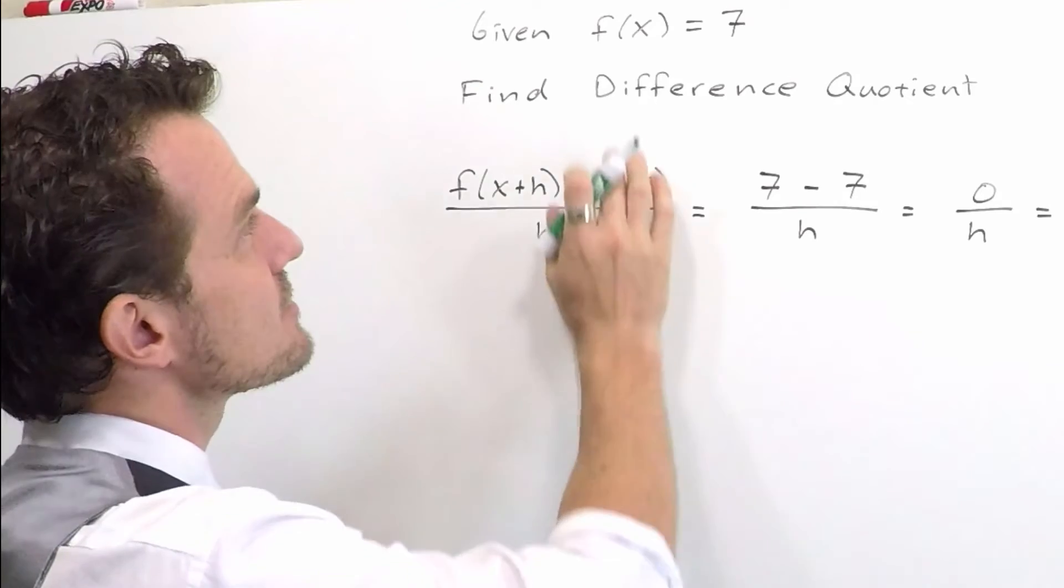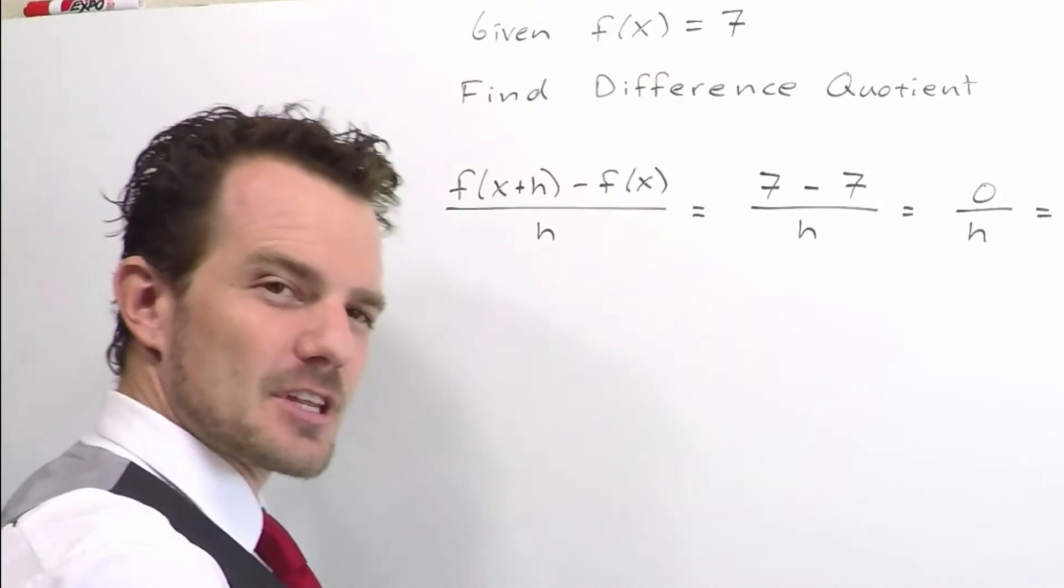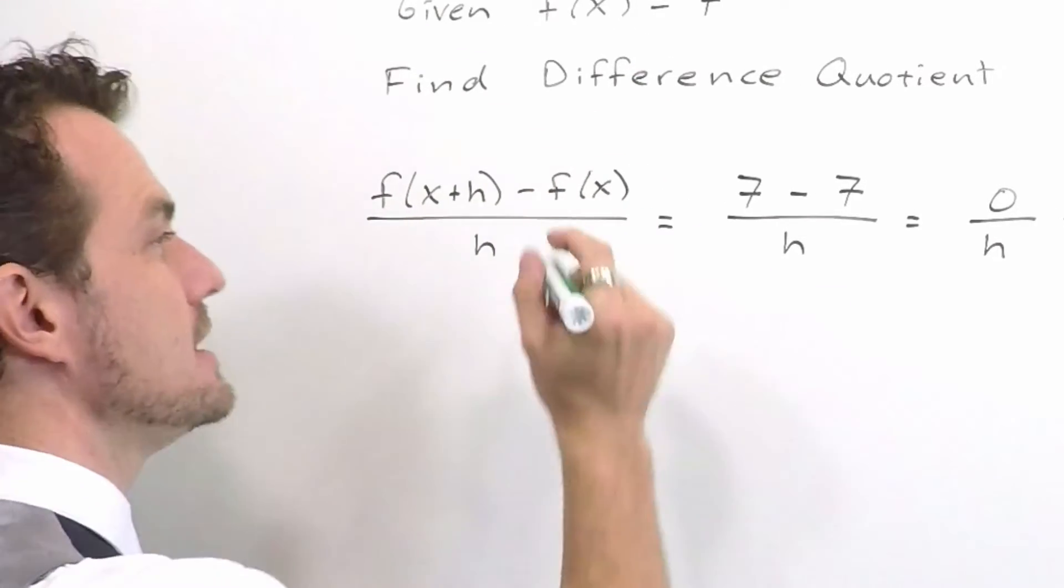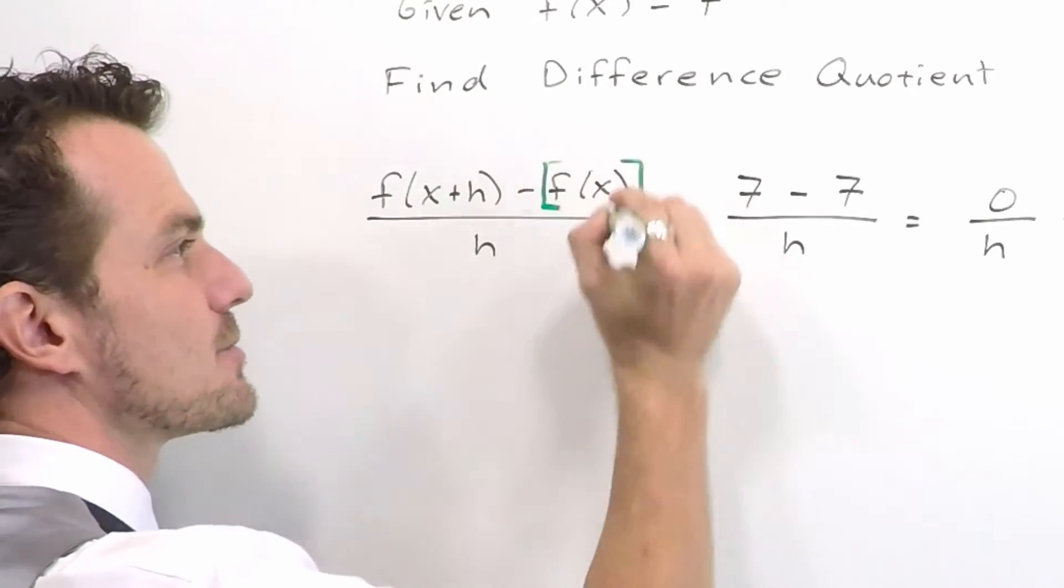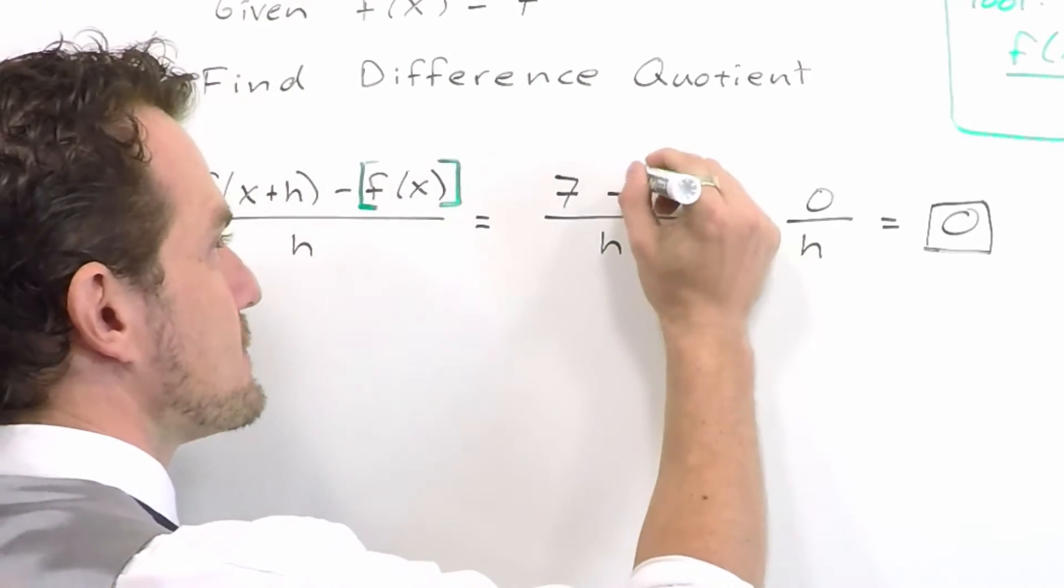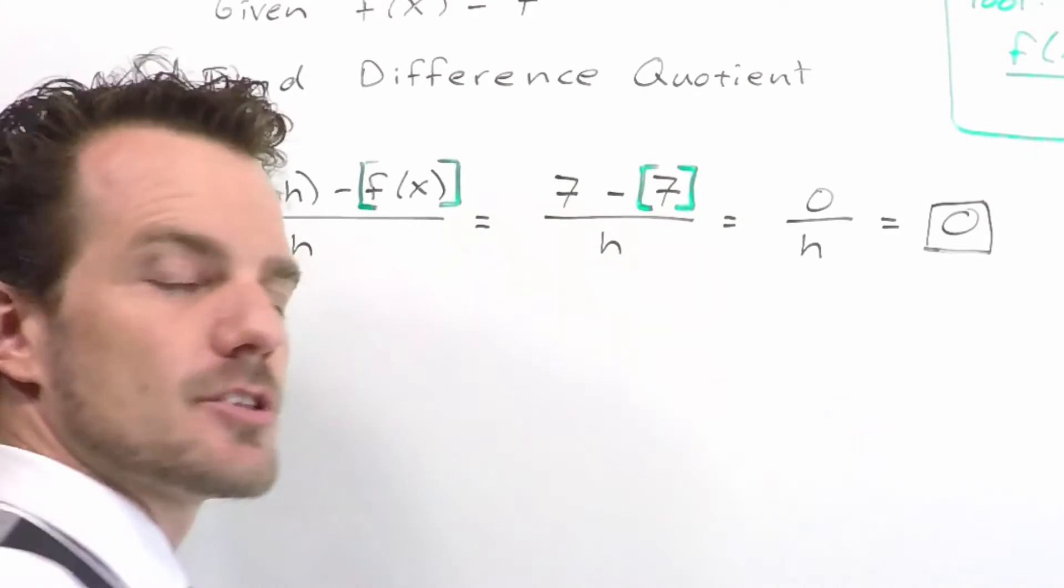And then f of x is just the original for the sake of safety, although it doesn't affect us here. You might want to throw some brackets or parentheses around this. It won't affect this problem, but other ones it certainly could.